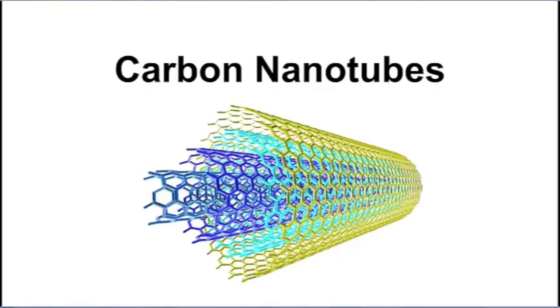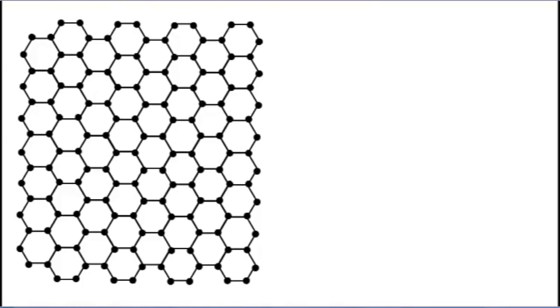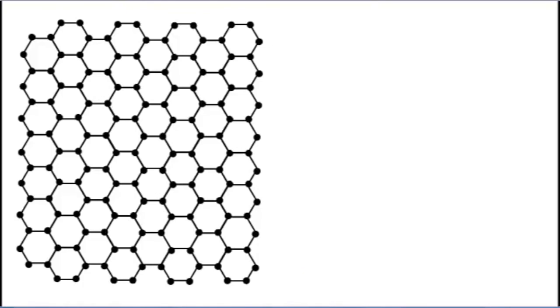Alright, now on to the last of the three, and the one around which most of the big advances in the field of nanoscience are focused. Carbon nanotubes. Carbon nanotubes are formed from one atom thick sheets of carbon called graphene rolled into cylinders.